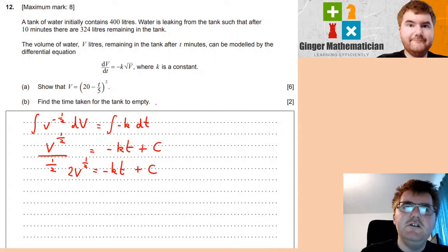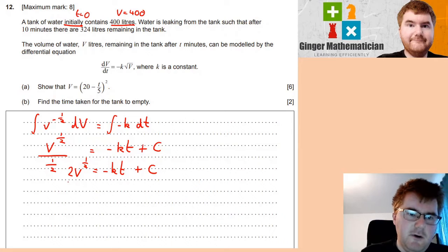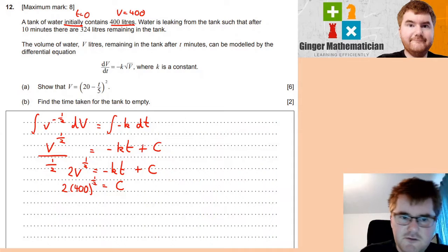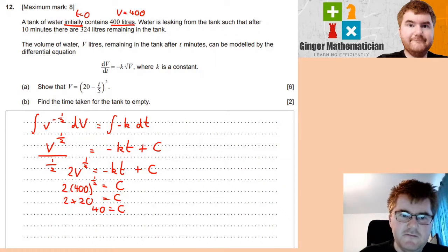At this point, we can use our initial conditions. So, when T is equal to zero, then V is equal to 400. So, we pop that in. So, two lots of 400 to the power of a half. Well, T is zero, so that disappears. So, we just get C. And let's work through this. So, the square root of 400 is going to be equal to 20. And then 2 times 20 is equal to 40. So, our constant is going to be equal to 40.